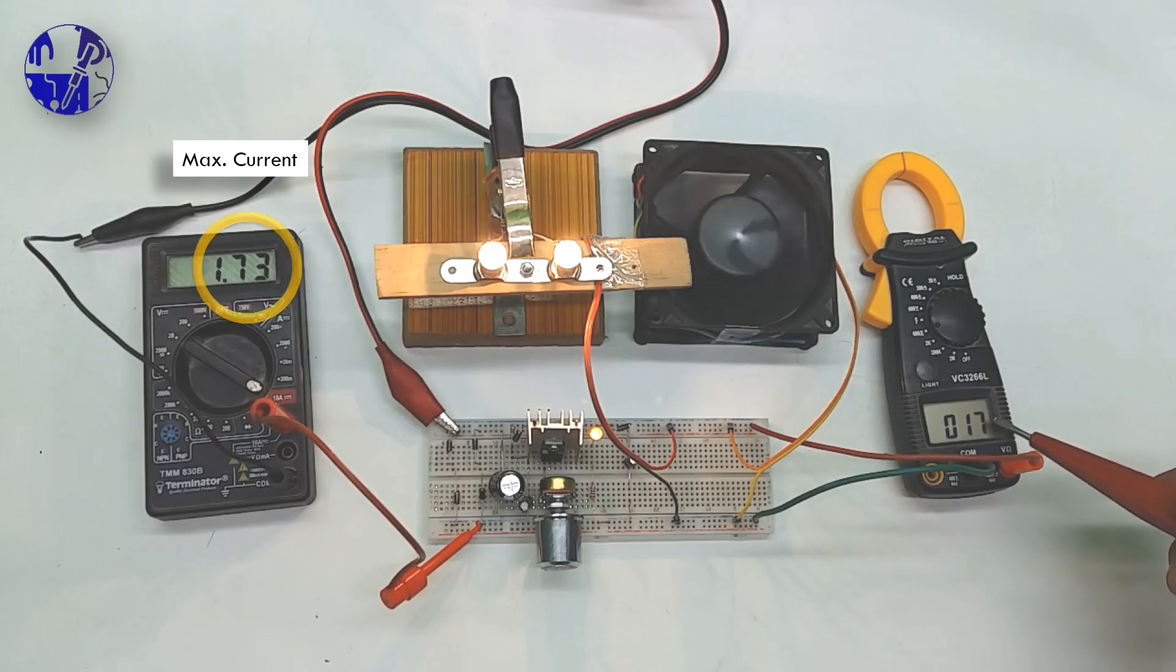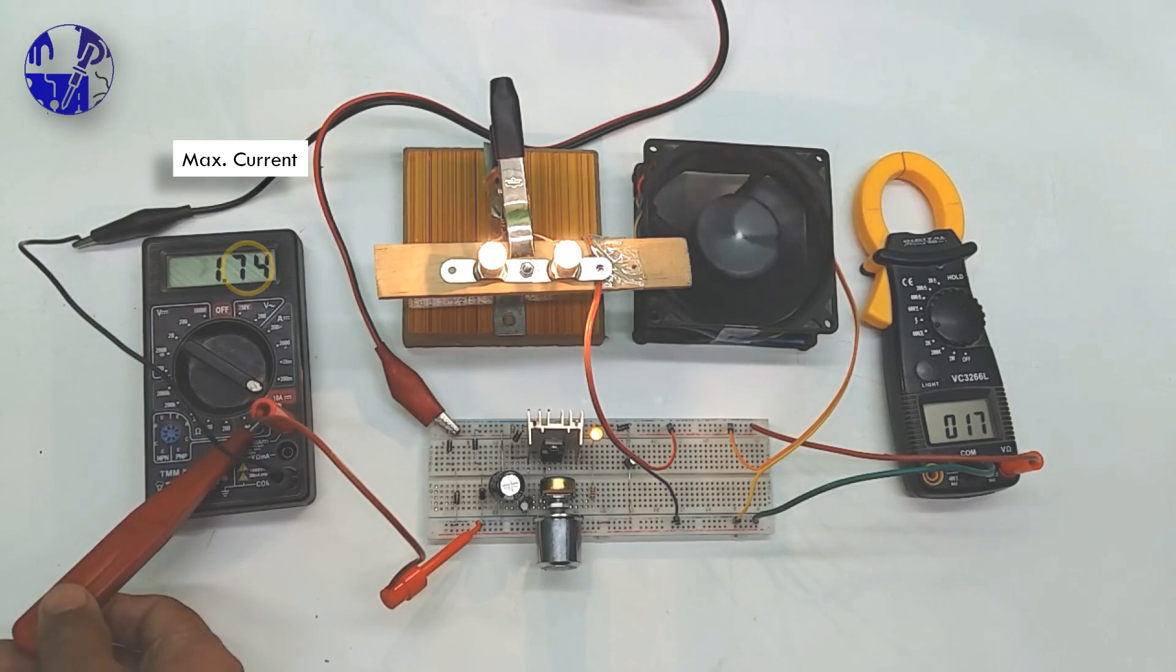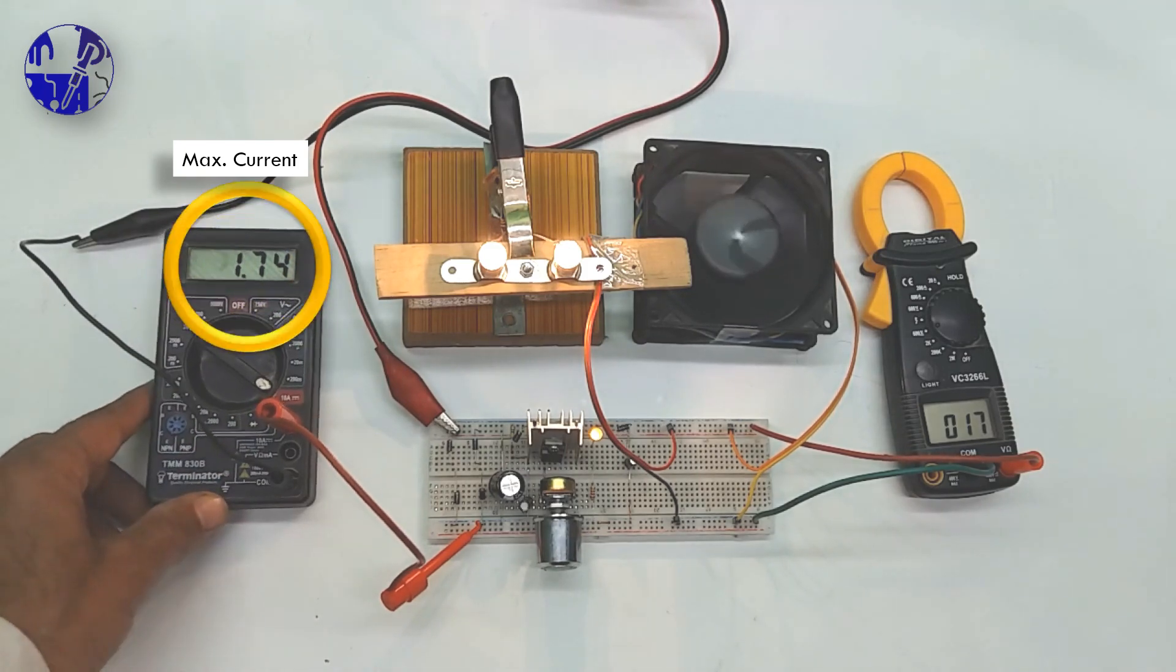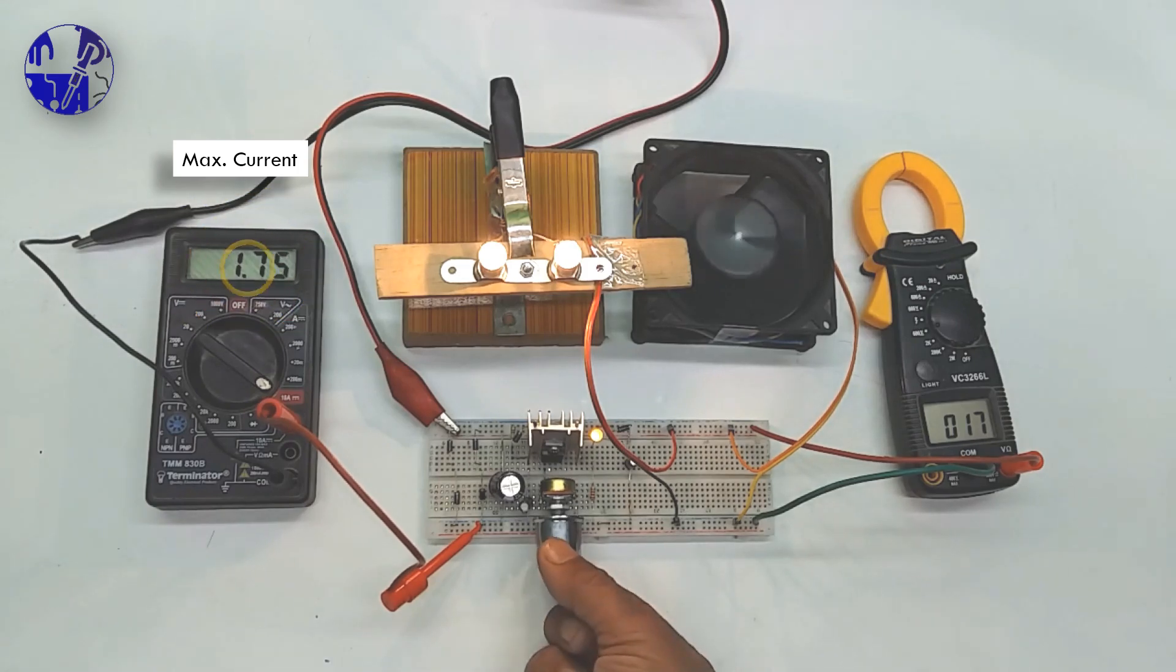The LM317 incorporates essential features like current limiting and thermal protection. These attributes highlight its pivotal role in powering and safeguarding electronic equipment.